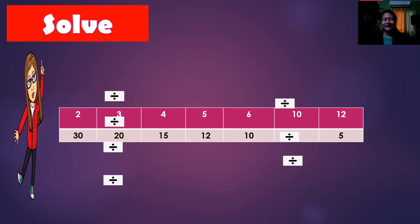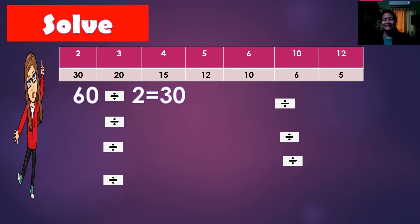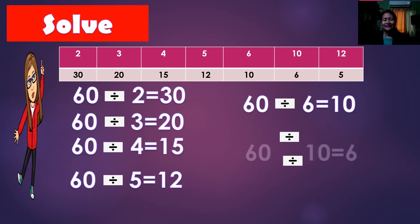Okay, let us check. So we have 60 divided by 2, the answer is 30. Okay? Then 60 divided by 3, the answer is 20. Then 60 divided by 4 is 15. Then 60 divided by 5 is 12.